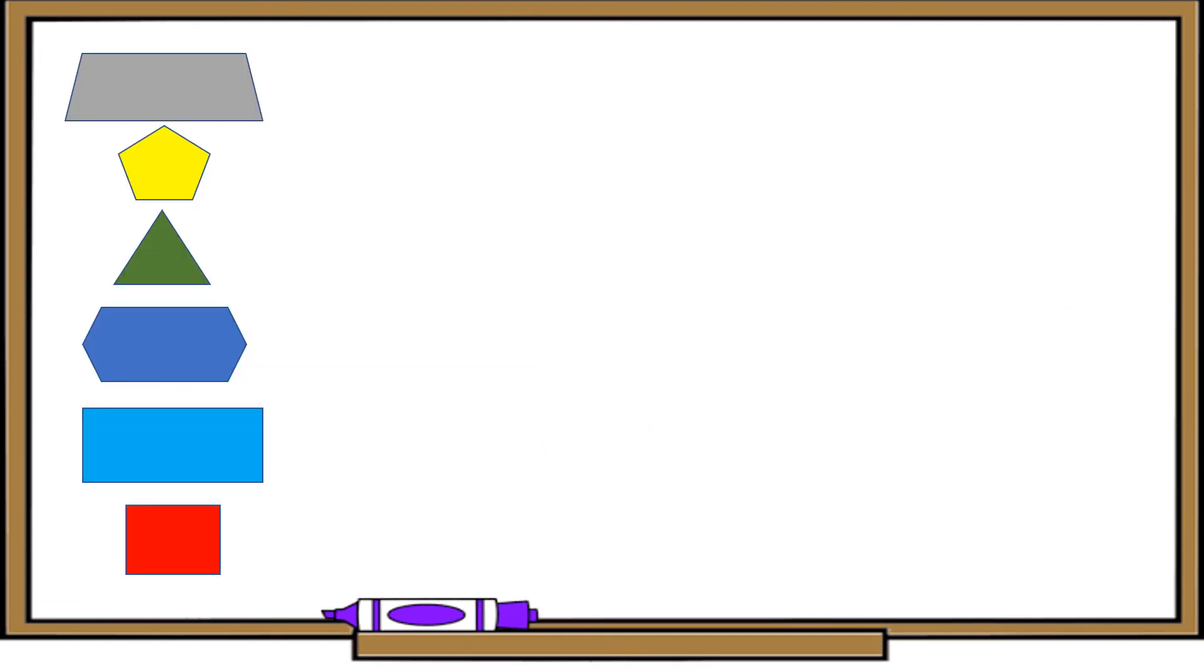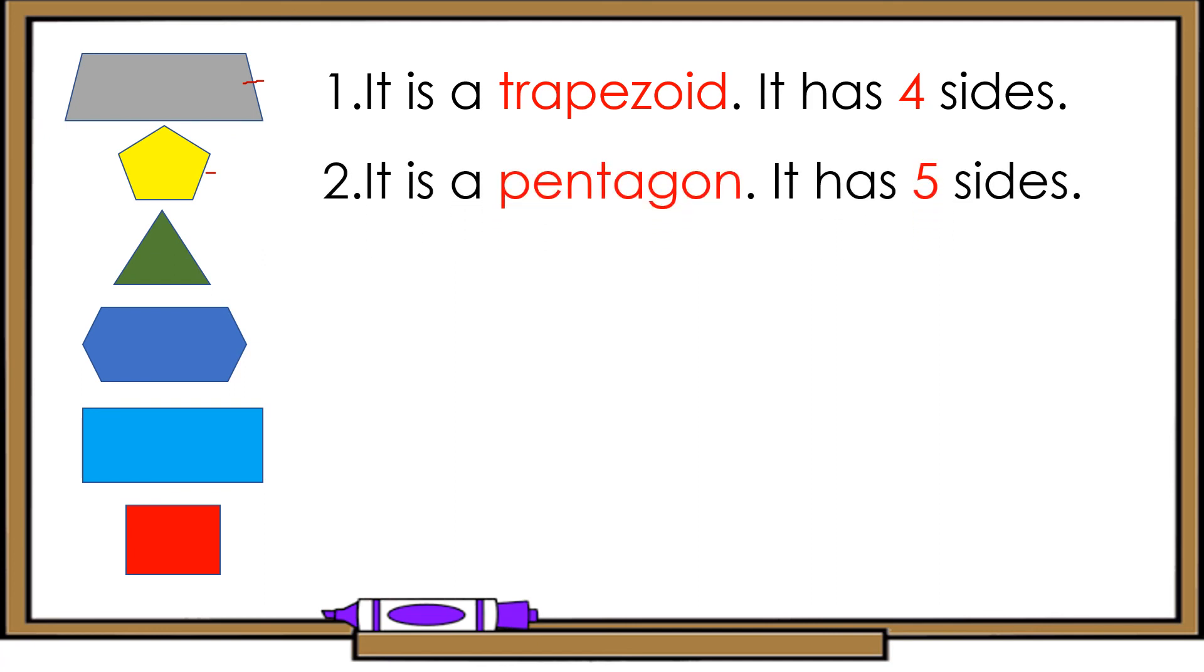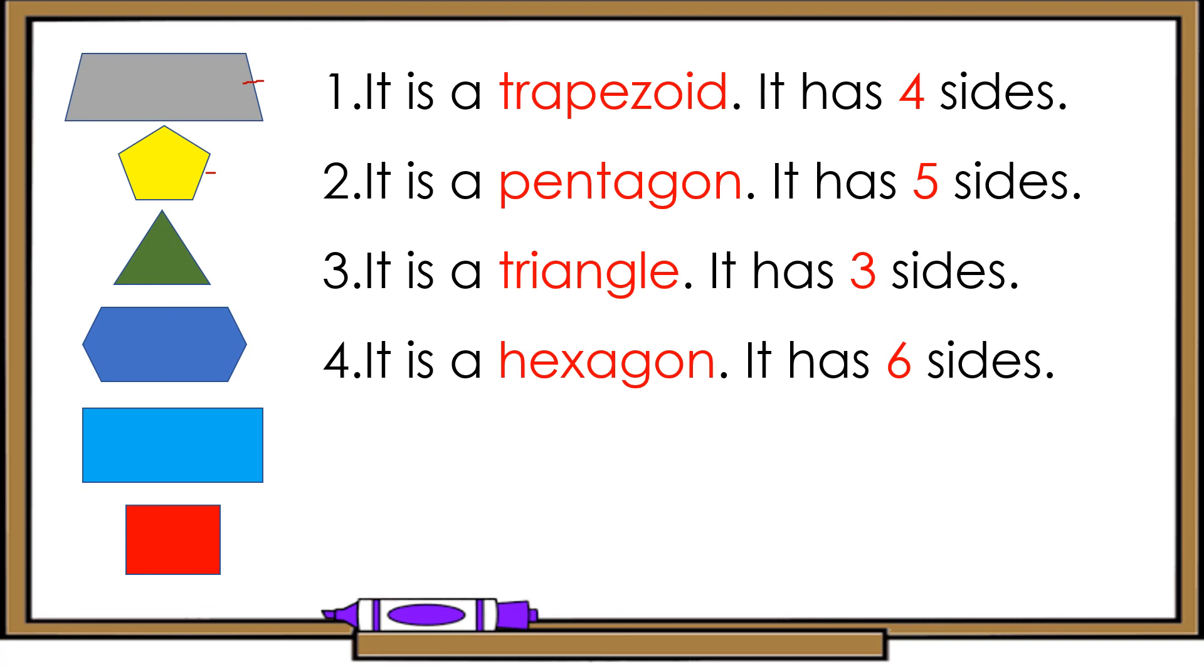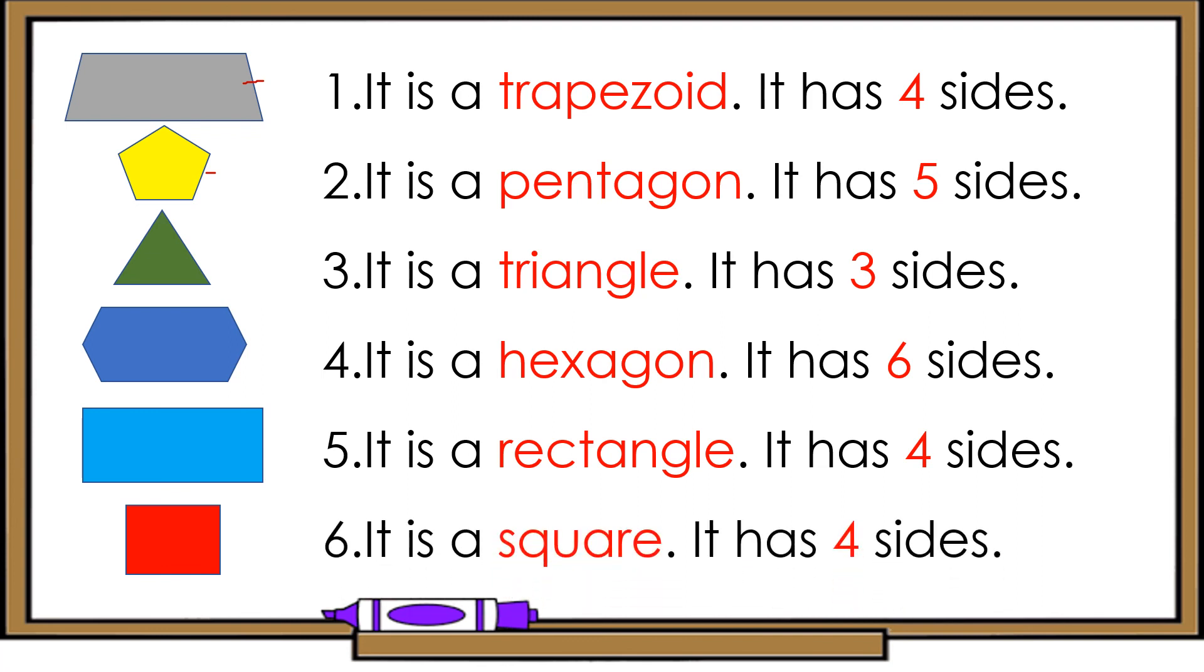Now, children, what shape is this? So, it is a trapezoid and it has four sides. How about the second shape? So, it is a pentagon. And a pentagon has five sides. How about the third shape? So, it is a triangle. And a triangle has three sides. For the fourth shape, it is a hexagon. And it has six sides. How about the fifth shape? So, this is a rectangle. And a rectangle has four sides. And it has length and width. How about the sixth shape? So, it is a square. And it has four sides. And all sides are equal.